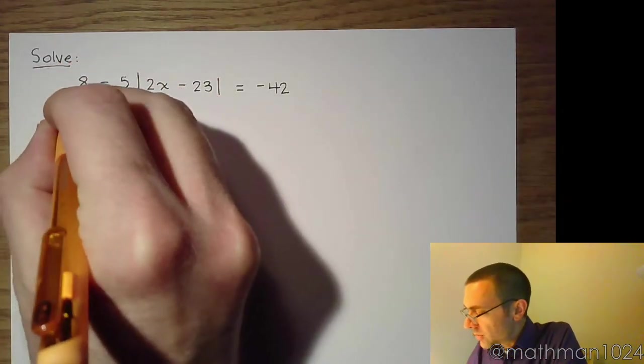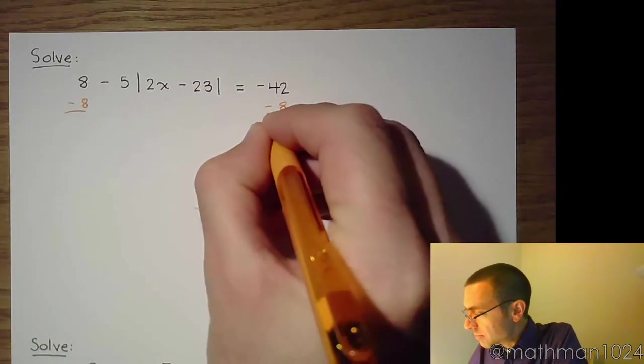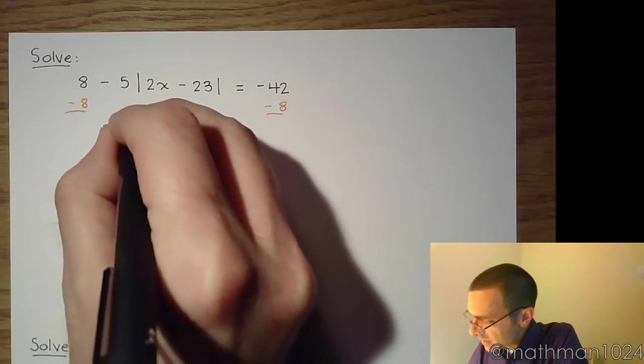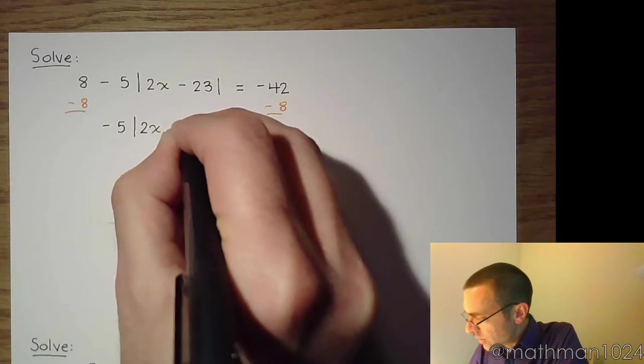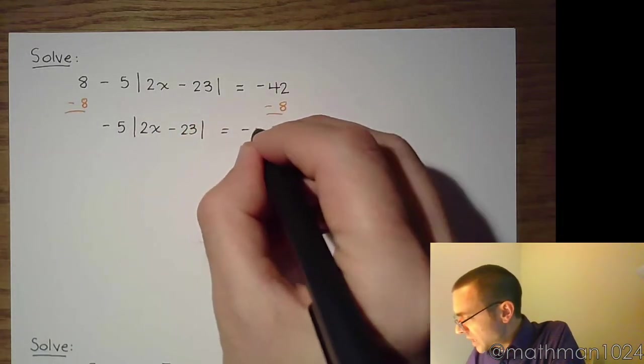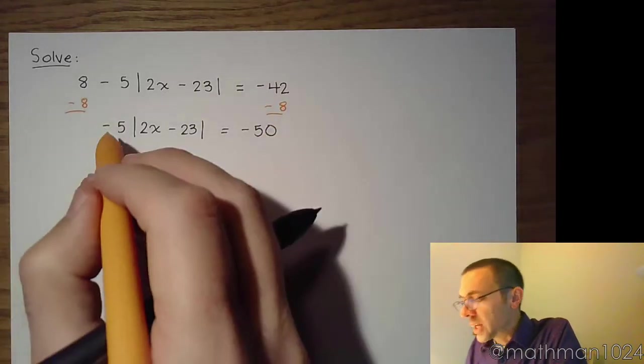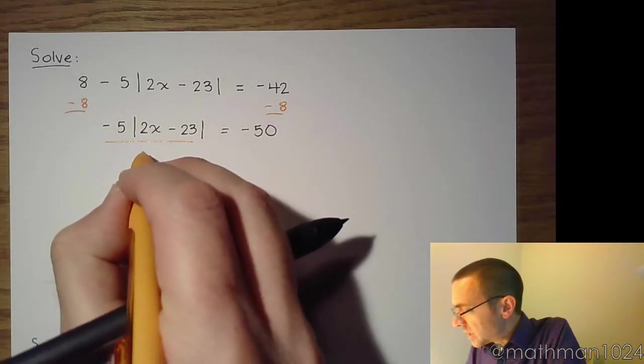So we're going to do that by first subtracting 8 on both sides of the equation. So now we have negative 5 times the absolute value of the quantity 2x minus 23 is equal to negative 50. And now we need to get rid of the negative 5, so we can do that by dividing both sides by negative 5.